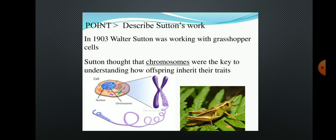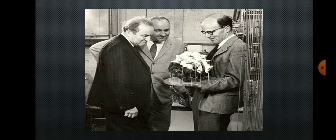Then in 1902, Walter Sutton observed the paired chromosomes in the cell of a grasshopper. He was the scientist who predicted that chromosomes are paired — until then, it was not known that chromosomes were paired.